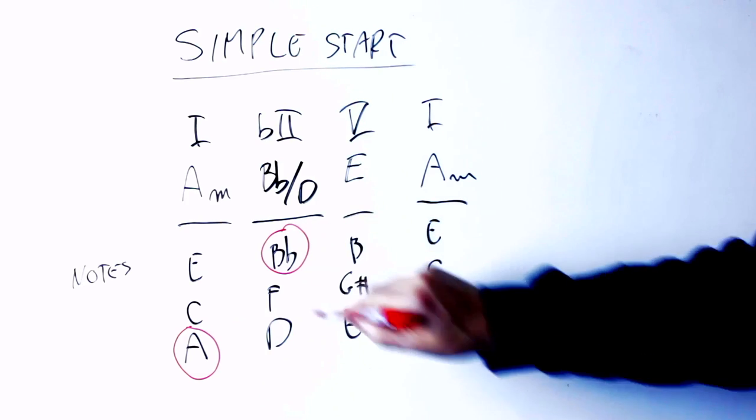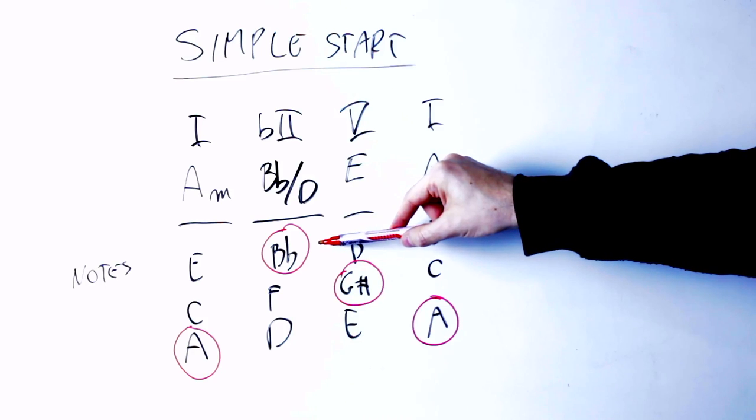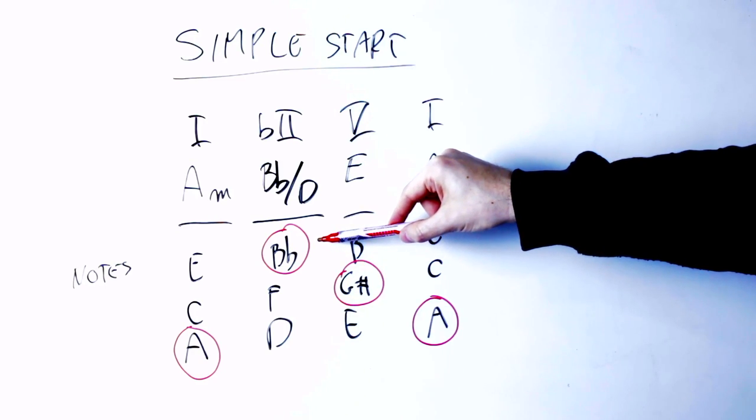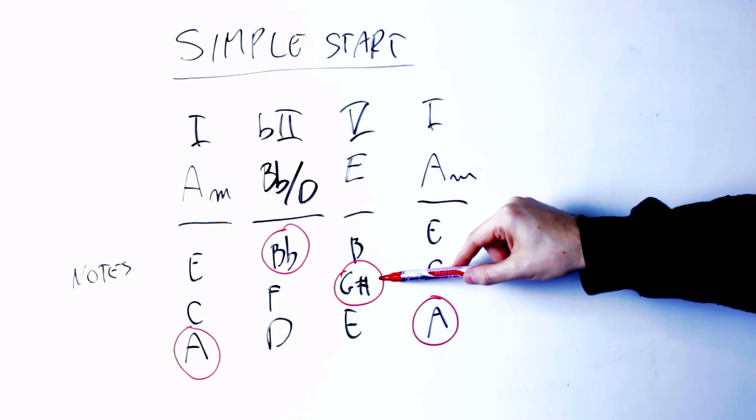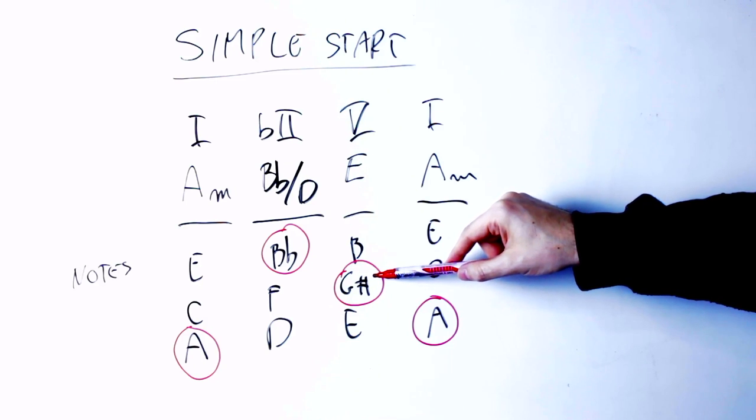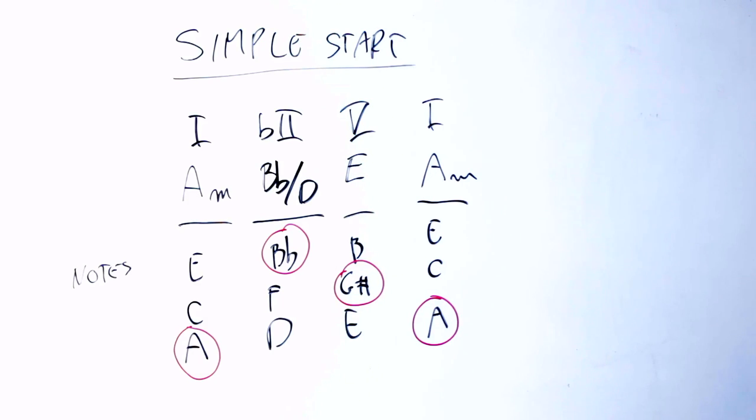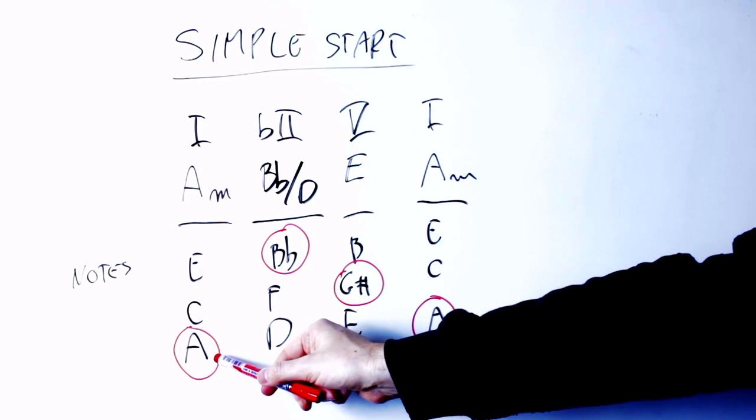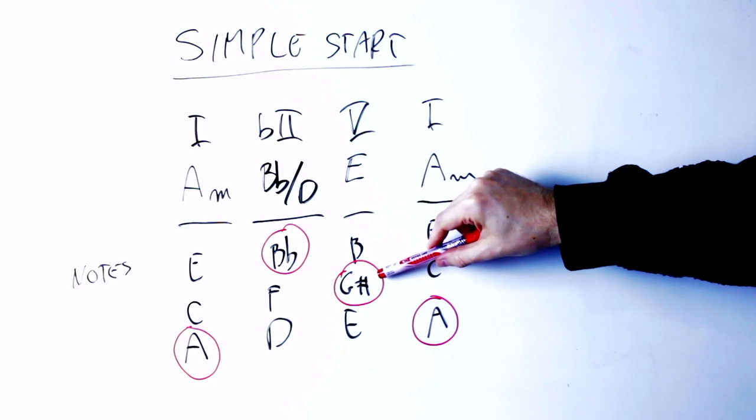So you see now, in the progression we have a double chromatic neighbor to the tonic, meaning that the Neapolitan chord contains the B flat note, which is not in the original natural minor scale, and this B flat is just a half step distant from the tonic of the scale. And the E chord contains the G sharp note, which is again not in the original natural minor scale, it's in the harmonic minor scale, and again it's just a half step away from the tonic of the key. So when we play this chord progression, we are playing the tonic of the key A, then we are playing the note just a half step above that, the note just a half step below that, and the tonic again.